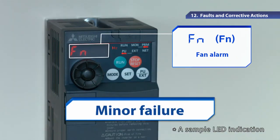Next, the minor failure. Although the inverter does not trip, even if an alarm is displayed, prompt actions are required. Failure to do so may lead to a major fault. The alarm signal output can be set in the parameter.